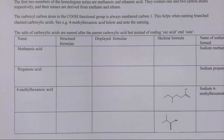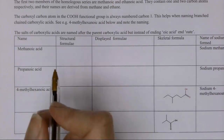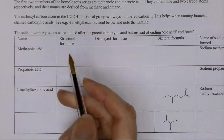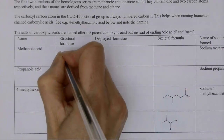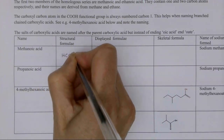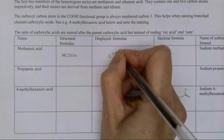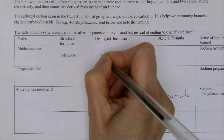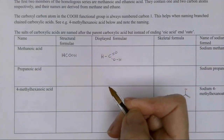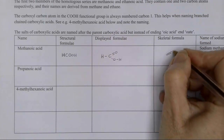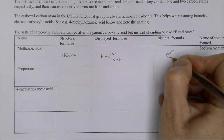We're going to look at some structural, displayed, and skeletal formulas for some of these carboxylic acids. I'm going to talk you through some of the ones that can cause issues. Methanoic acid — nice and straightforward. You've got C and then COOH, one H there. Displayed formula: C double bond O, OH, and your H there because your carbon has four bonds. Skeletal: you've simply got the double bond oxygen and the OH.